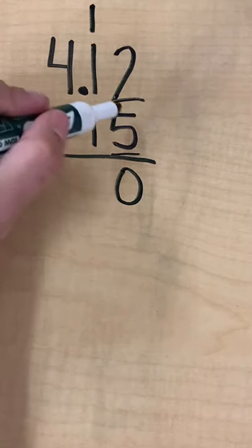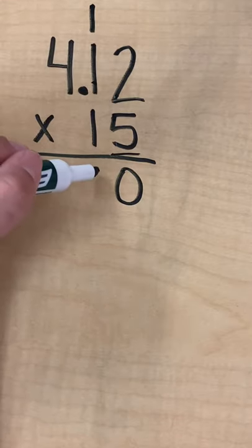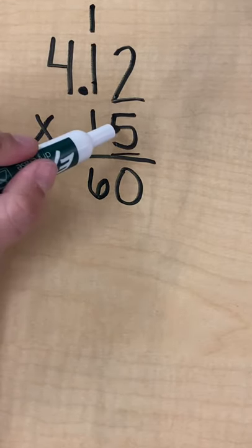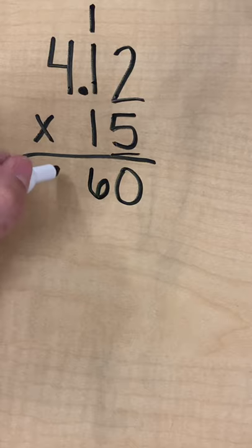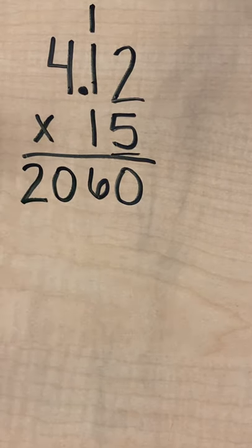5 times 1 is 5, plus 1 is 6. 5 times 4 is 20. Now because I don't have another number over here, I'm going to just drop my 2 down into my partial product.